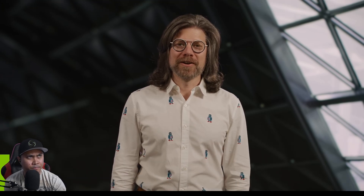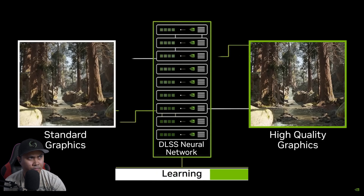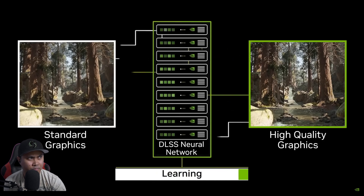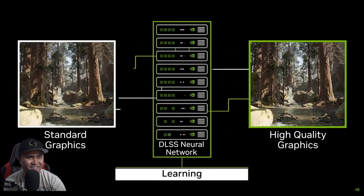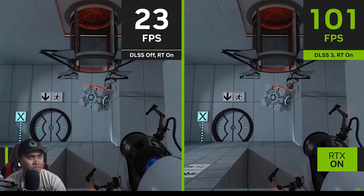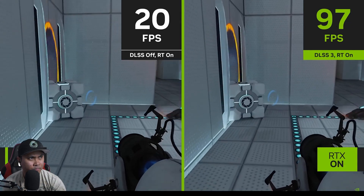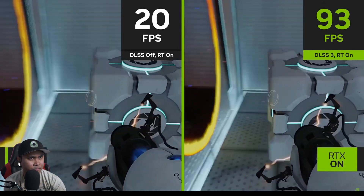AI is transforming the world and computer graphics is no exception. Five years ago we introduced DLSS, which revolutionized graphics with better speed and better image quality through artificial intelligence. Since then, the AI model behind DLSS just keeps learning, with new capabilities such as frame generation, increasing rendering speed by up to 4x with excellent image quality.